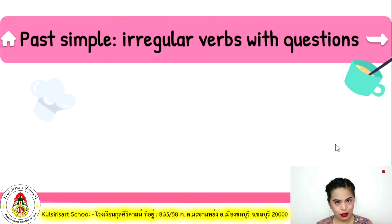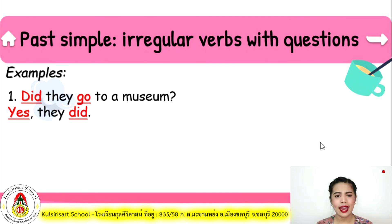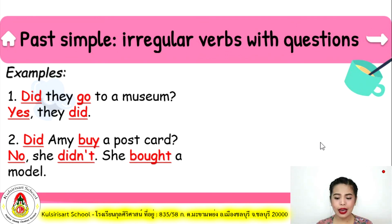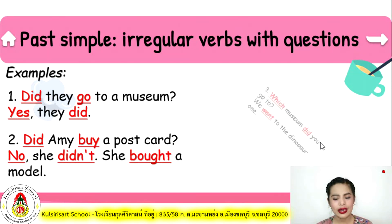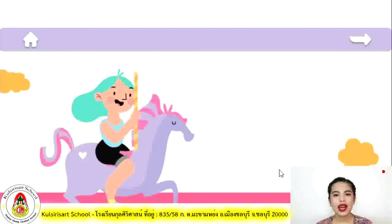Past simple irregular verbs with questions. Examples on page 22: 'Did they go to a museum? Yes, they did.' 'Did Ami buy a postcard? No, she didn't. She bought a model.' 'Which museum did you go to? We went to the dinosaur one.'